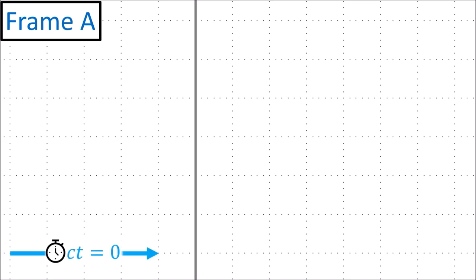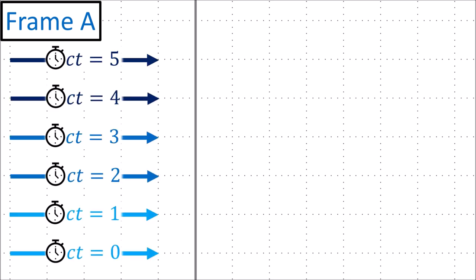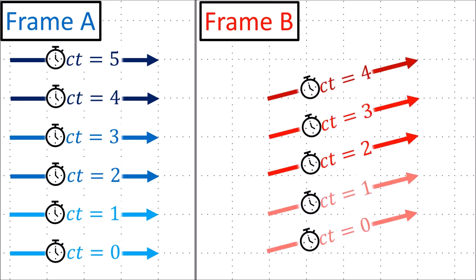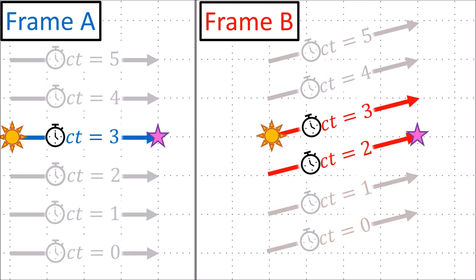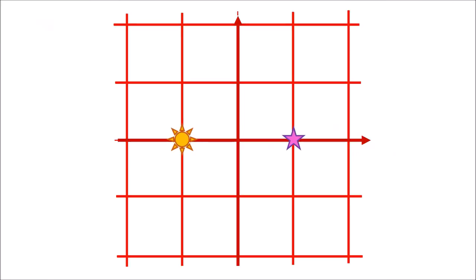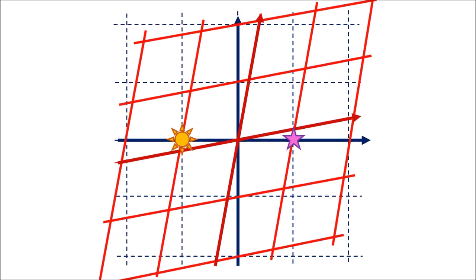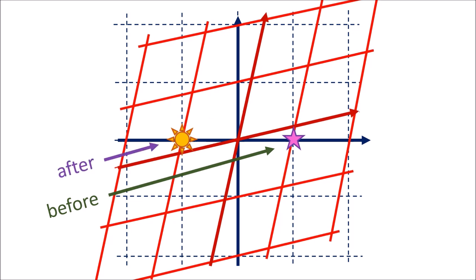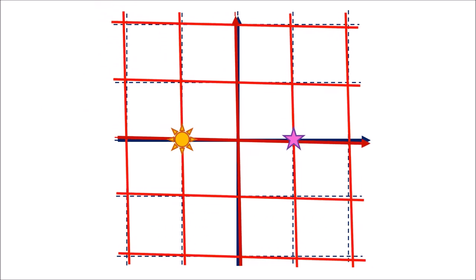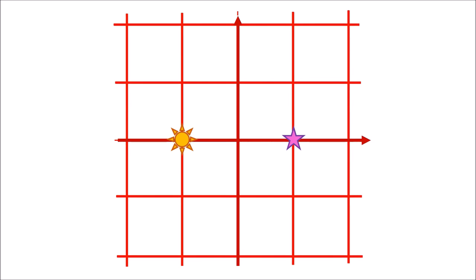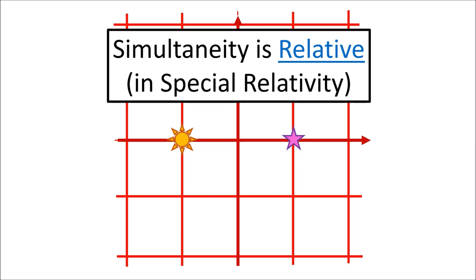In some reference frames, time passing in a spacetime diagram appears as a horizontal line moving upward, while in other frames it appears as a diagonal line moving upward. This means two events that appear to happen at the same time in one reference frame will not happen at the same time in another. In one frame, the sun and star events happen simultaneously; in another, the star event happens first; and in yet another, the sun event happens first. Simultaneity is relative in special relativity.